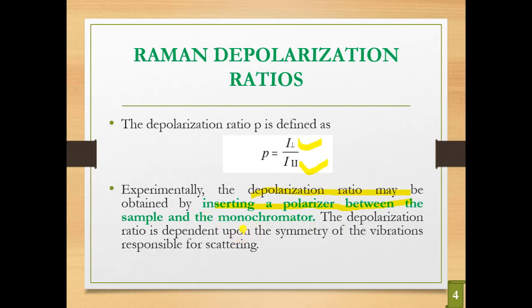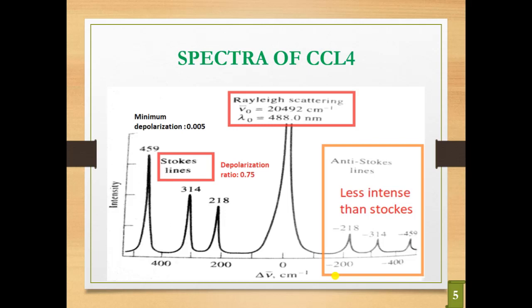The depolarization ratio depends upon the symmetry of vibrations responsible for scattering. This will be made clear by the example of carbon tetrachloride. Here we can see the Raman spectrum of CCl4, where we get 3 peaks: one at 459, then 314, and 218 cm⁻¹.